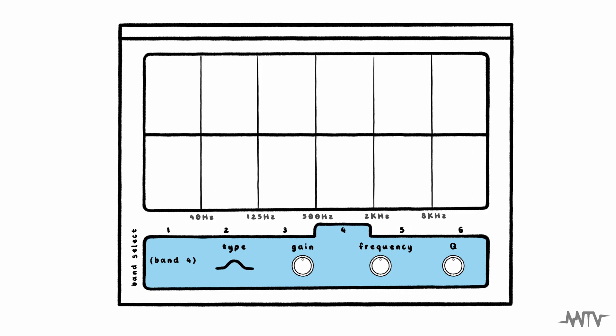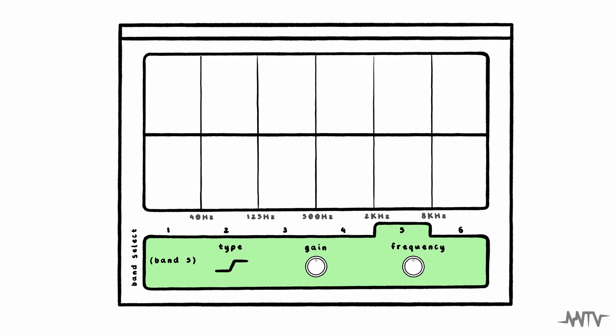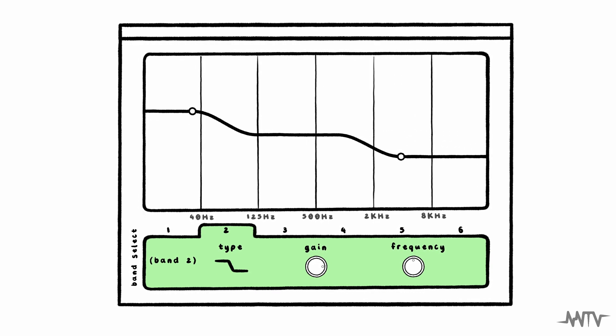Shelf bands are bands that will affect the volume of our center frequency and all those above it, in the case of a high shelf, or all those below it, in the case of a low shelf. Though they have many uses, they are most commonly employed to increase the overall brightness of a sound.